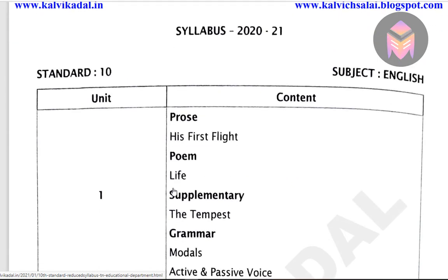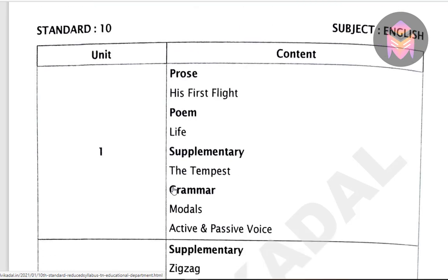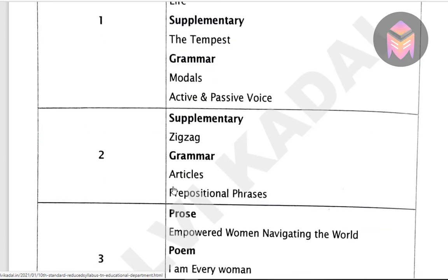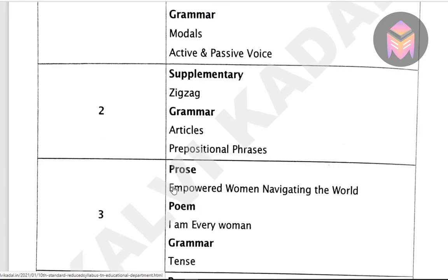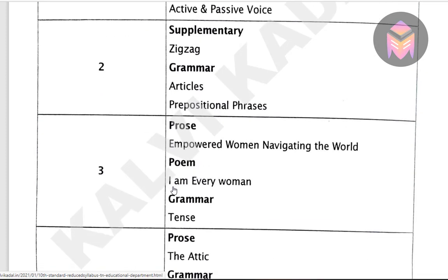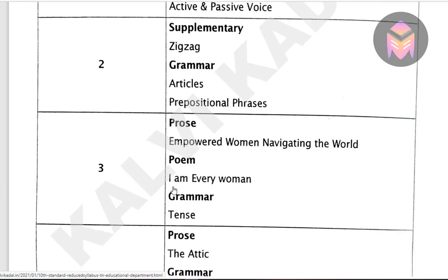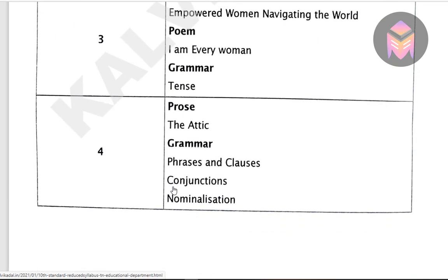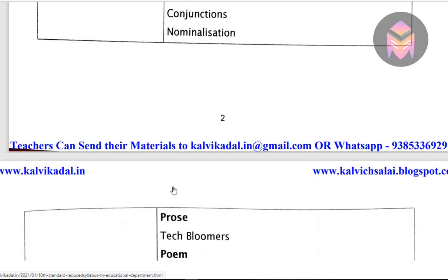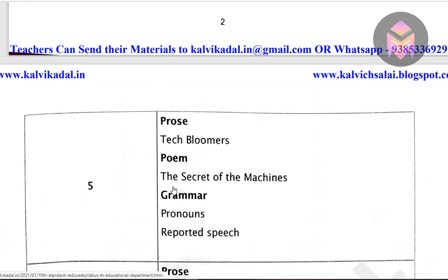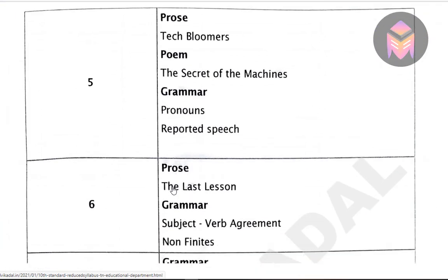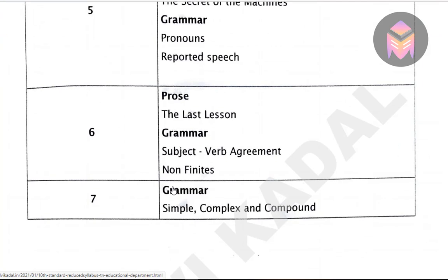You will be ready to start with Prose, Poem, Supplementary, and Grammar. EL1 is the first unit. The second unit is the prose and poem. The third unit is the supplementary. The fourth unit is the poem. The fifth unit is the supplementary and poem.